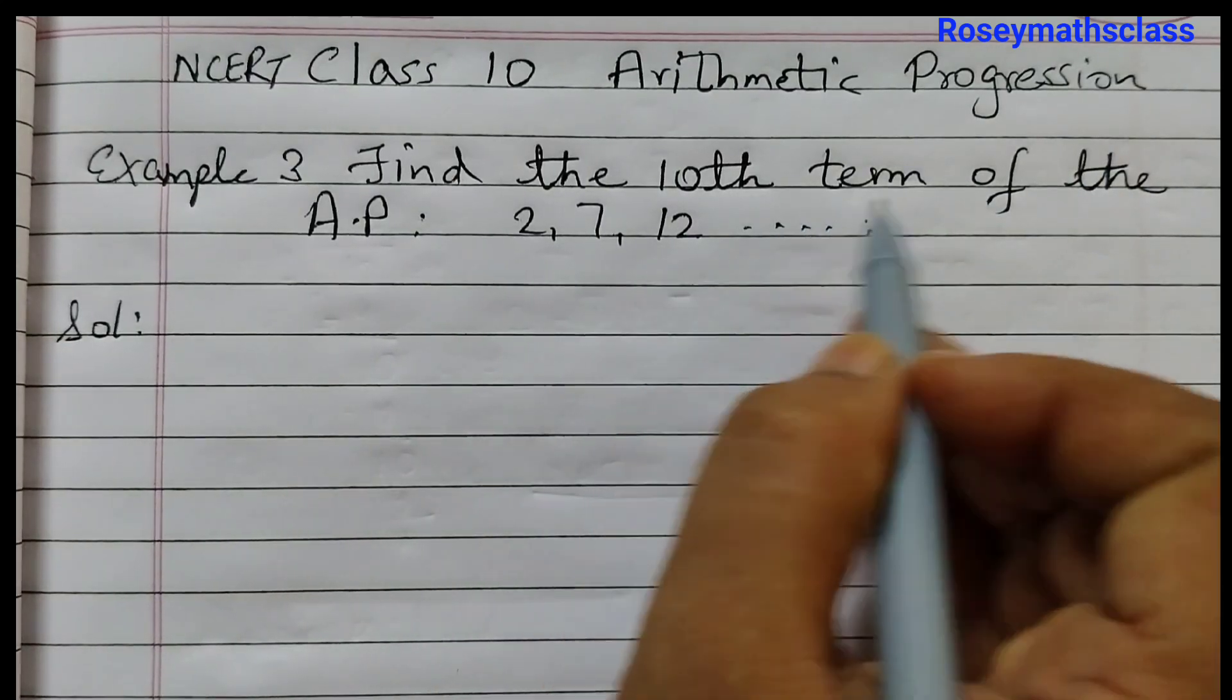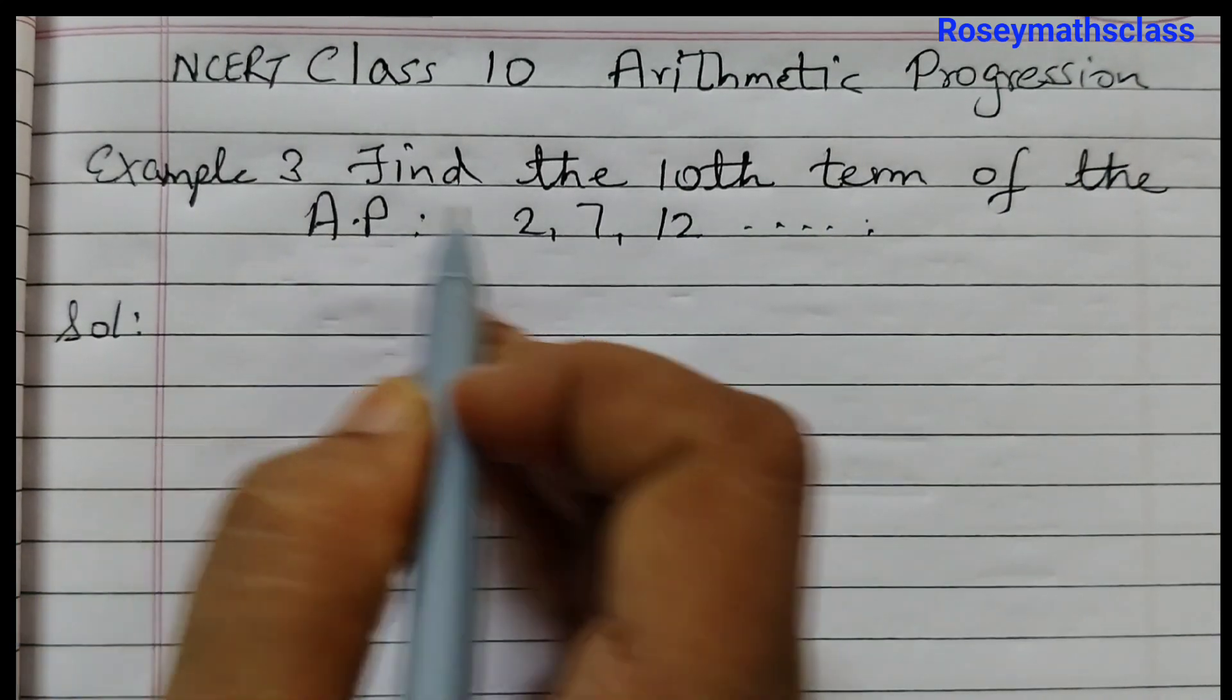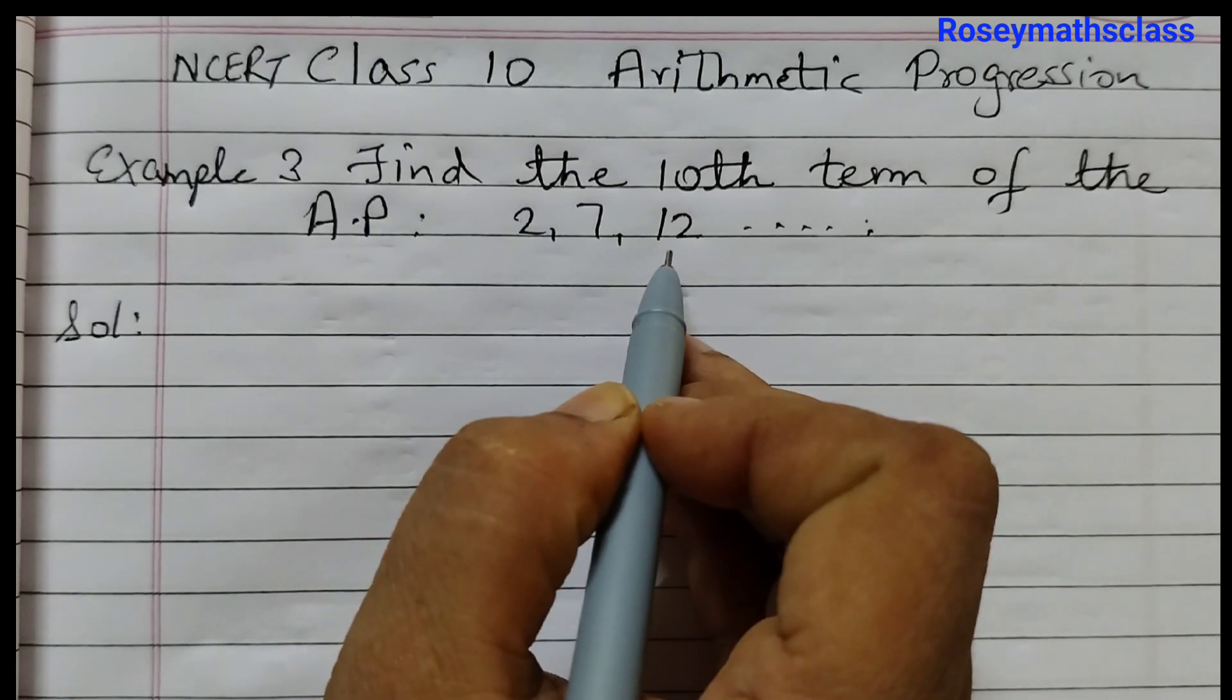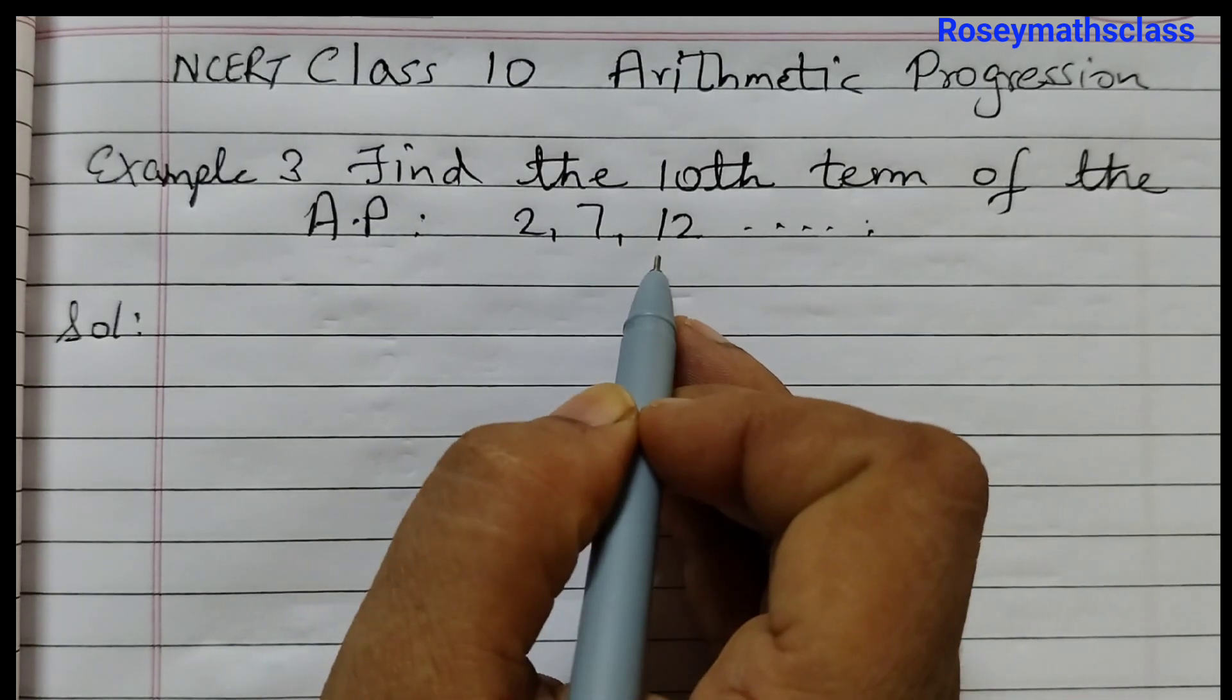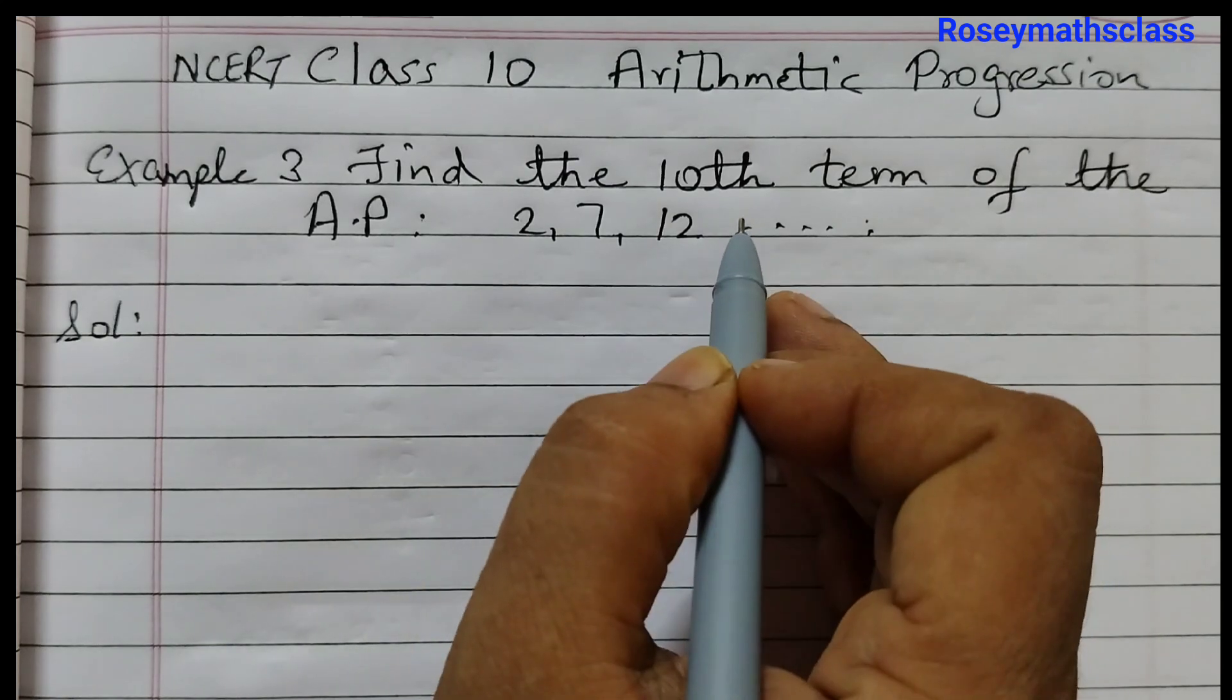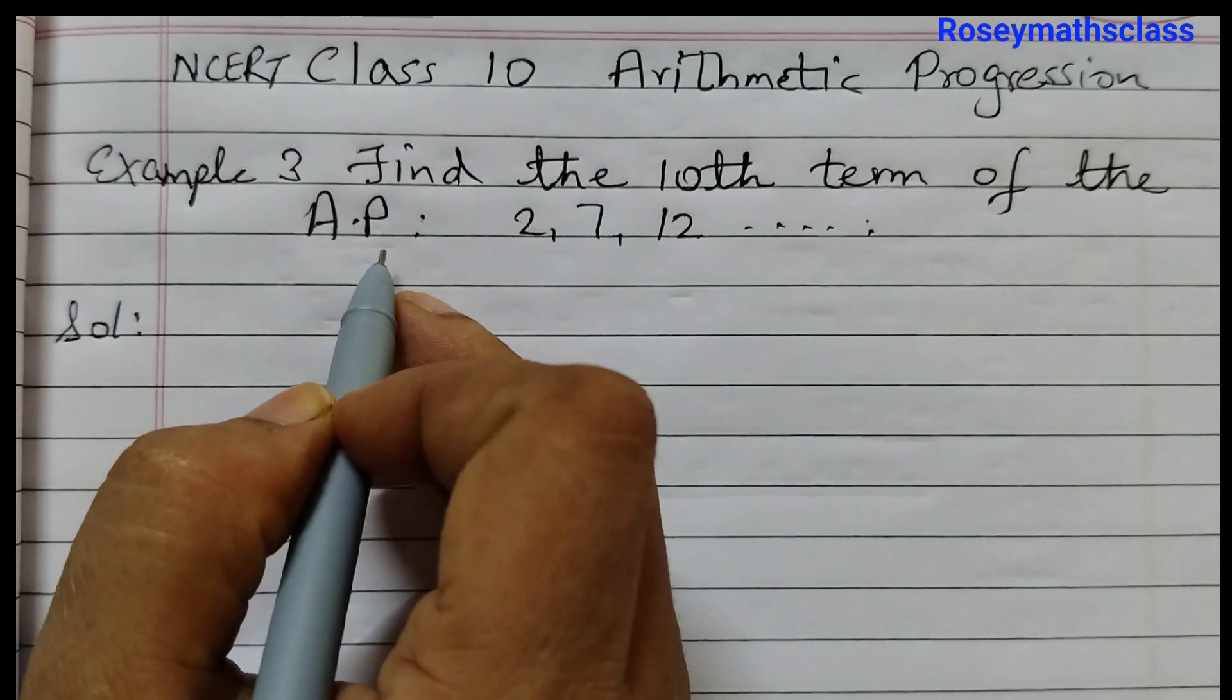Find the 10th term of the AP, that is arithmetic progression 2, 7, 12. So there is an AP given, the first 3 terms are given: 2, 7, 12. We need to find out the 10th term of this AP.